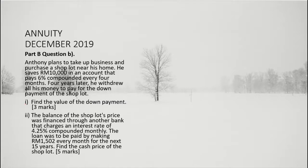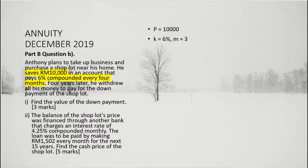So, let us first identify the given information. It is said that Anthony saved RM 10,000. Since this is the initial saving, we have the principal, capital P, equal to 10,000. Next, the interest rate is given as 6% compounded every 4 months. Thus, this gives us the nominal rate, small letter k, equal to 6%, and the conversion frequency, denoted as small letter m, equal to 3. Why 3 and not 4? Because the interest is calculated every 4 months, which means that in a year, the interest is calculated 3 times. The last piece of information is that this money is saved for a duration of 4 years, so the term, denoted as small letter t, is equal to 4.